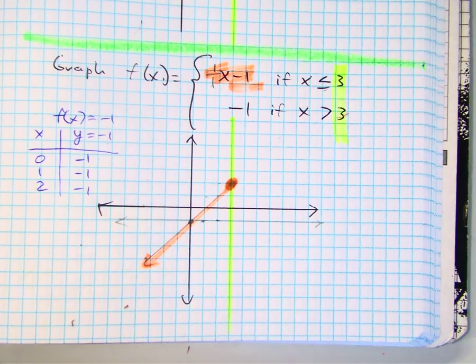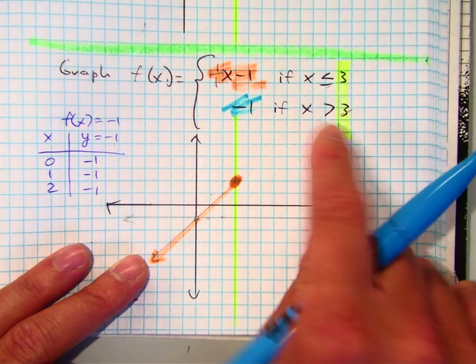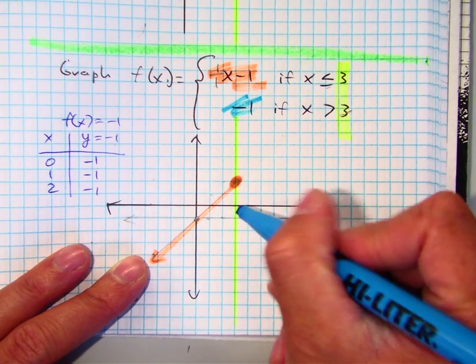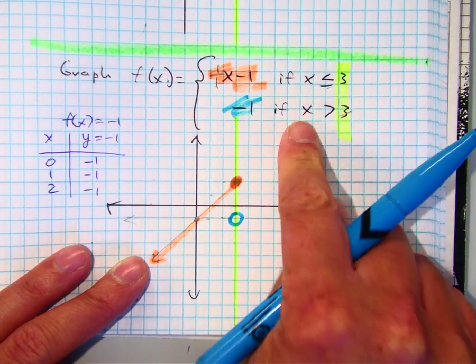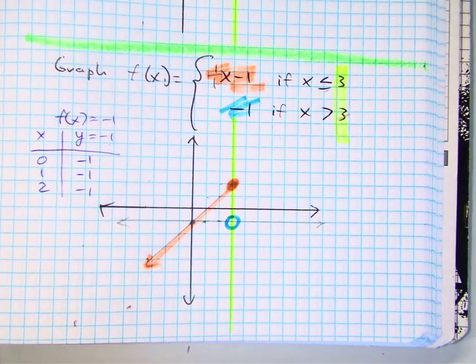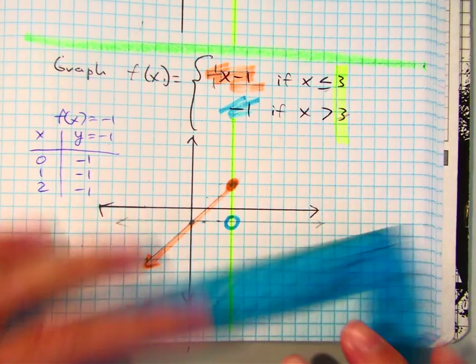Open or closed circle? It's an open circle at x equals 3. And I need values that are greater than 3. So where's that going to be? To the right.